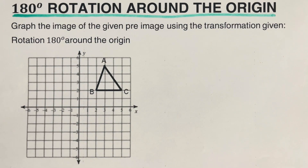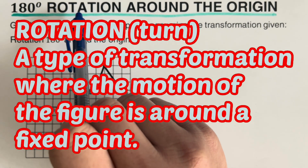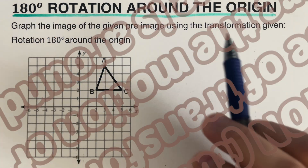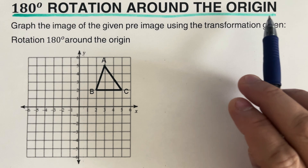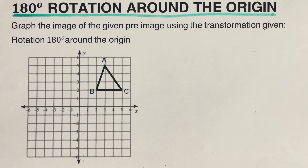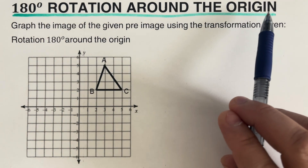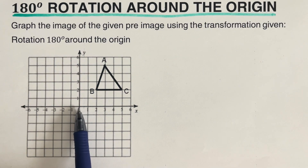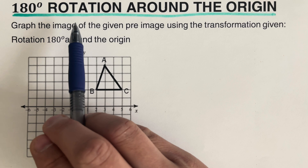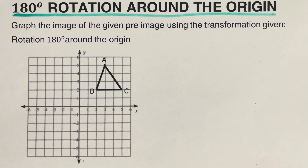This video focuses on 180-degree rotation around the origin. Rotation is sometimes referred to as a turn — it's a type of transformation where the motion of a figure is around a fixed point. For 180-degree rotation around the origin, the fixed point is the origin at (0, 0). When we rotate an object, we must choose a point, direction, and angle of rotation. The direction — clockwise or counterclockwise — doesn't matter for 180 degrees, and the angle of rotation is 180 degrees.